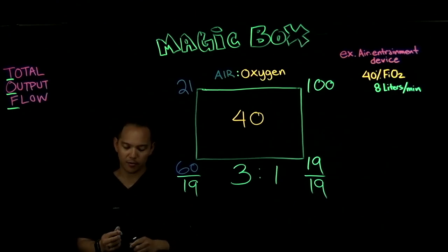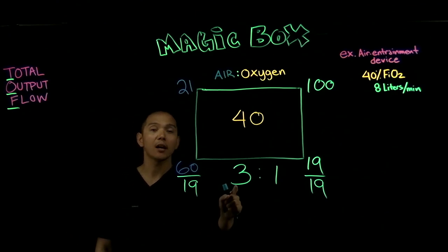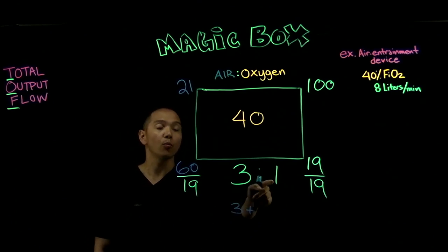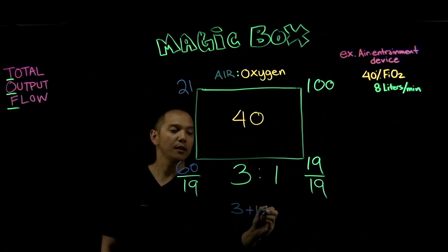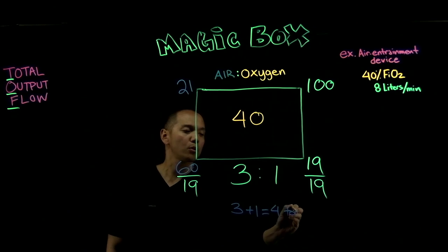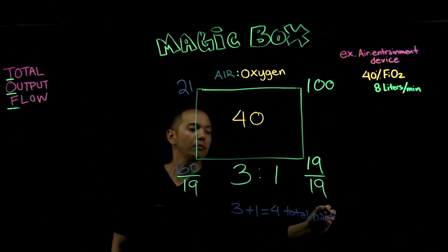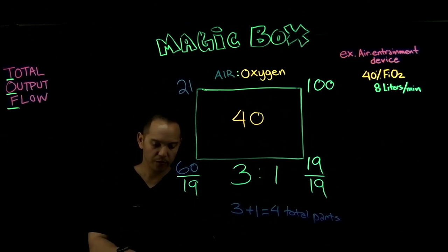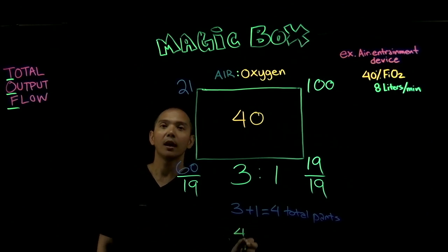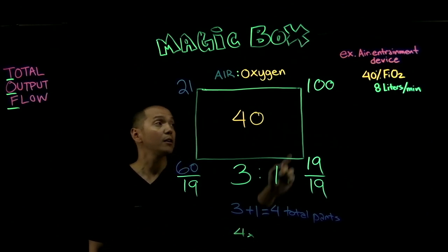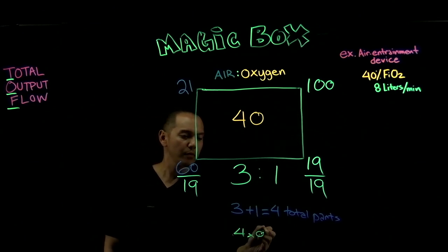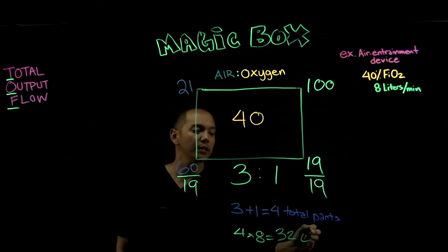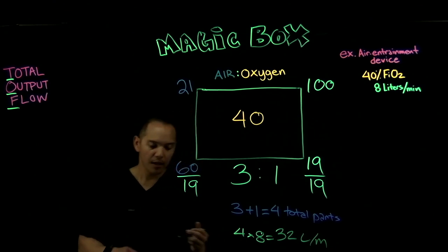To calculate total output flow, we take our three parts of room air and add it to our one part of oxygen, giving us four total parts. We then multiply those four total parts by our 8 liters per minute. Four times eight gives us 32 liters per minute.